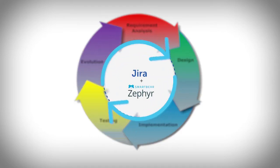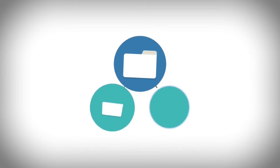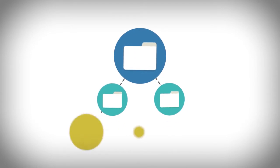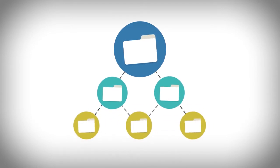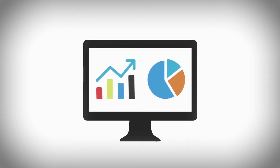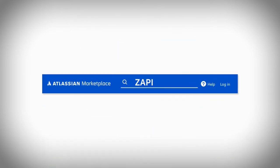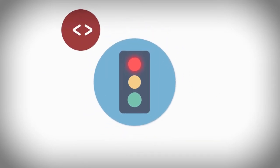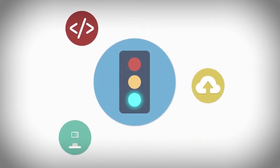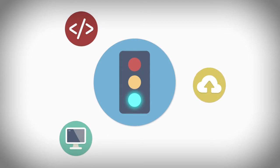Zephyr for Jira enhances test organization through a folder structure, enabling logical grouping of test cases within test cycles. It also easily integrates automation and continuous integration tools via Zappi, a powerful add-on tool that allows teams to conveniently retrieve tests for execution and programmatically update their results.